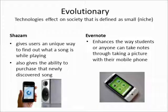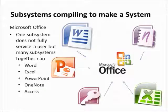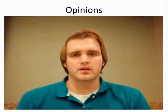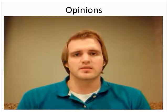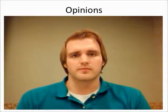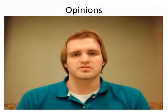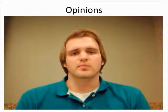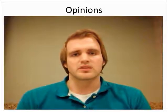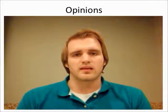Evolutionary technologies refer to small technologies that enhance a function of society. Shazam has enhanced the identifying and buying process of a song, and Evernote has enhanced the note-taking process. Microsoft Office is a great example of subsystems coming together to create a system — Microsoft Word alone cannot fill all the needs of a user, but Microsoft Office can. The third law's initial statement is a little broad, but redefining big as revolutionary and small as evolutionary makes the theory clearer.